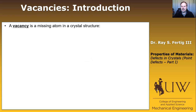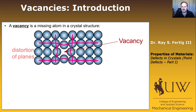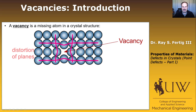So what is a vacancy? It's a missing atom in a crystal structure. We took an atom out and removed it — but we didn't just pull it out of the system; presumably we added it somewhere else. So you can imagine in a large system, if we had a bunch of vacancies, we might create a whole other layer of atoms, and the material would actually appear to grow.